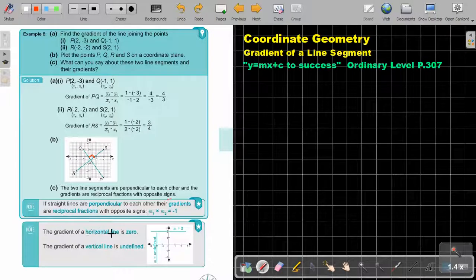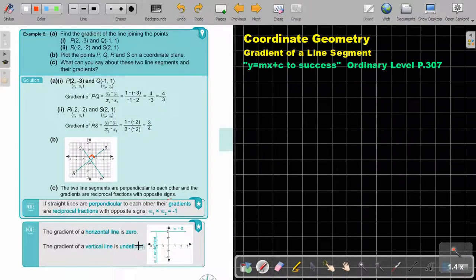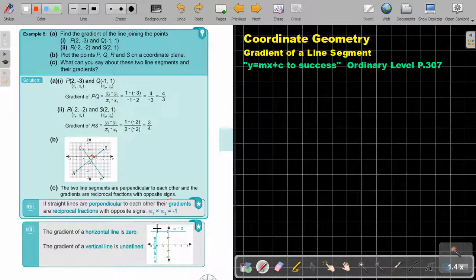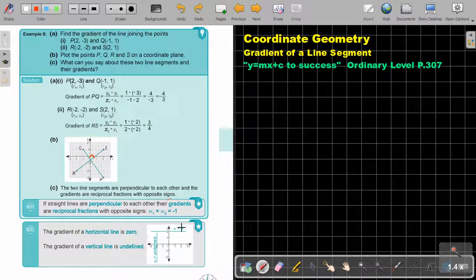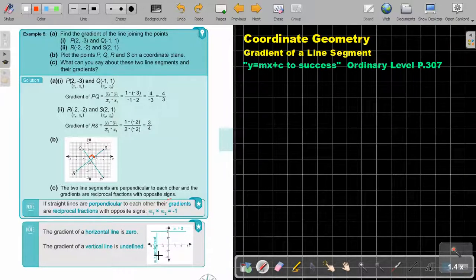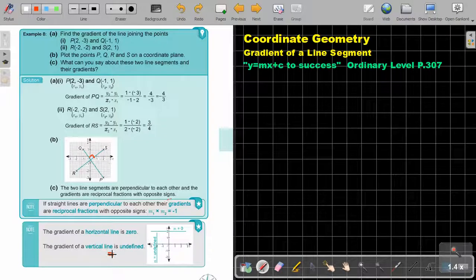The gradient of a horizontal line is 0. The gradient of a vertical line is undefined. Can I maybe just show you why it's undefined? Because if you go and it's difference in y over difference in x. And there's no difference in x. So it's almost like you are going to divide by 0 which is undefined.